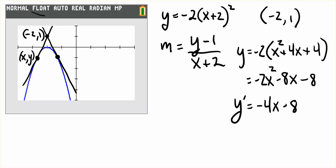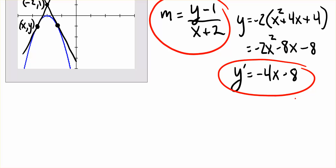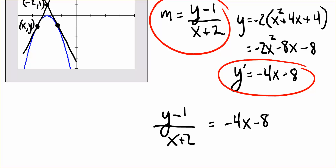So what we know right now is that those two things have to equal each other. The slope of the line passing through points (-2, 1) and (x, y) has to equal the derivative of the curve at that point x. So we set these two equal to each other and get: y minus 1 over x plus 2 is equal to negative 4x minus 8.